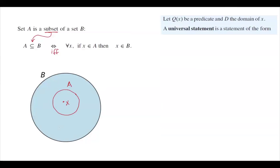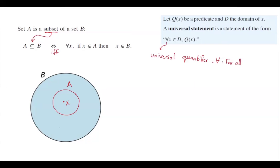Going back to basic definitions: let Q(x) be a predicate and D be the domain of x. The universal statement is a statement with the universal quantifier 'for every.' This is called the universal quantifier — it means for all, for every x in domain D, Q(x) holds. And Q(x) can be any predicate, like x squared is greater than or equal to x, or anything else.